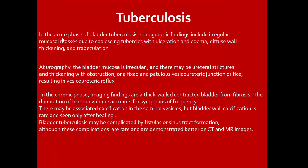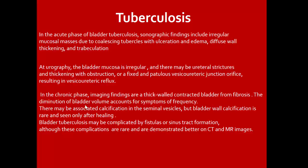Tuberculosis is one cause of cystitis. In the acute phase, bladder TB sonographic findings include irregular mucosal mass due to coalescing tubercles with ulceration and edema, diffuse wall thickening, and trabeculation. Urography shows irregular bladder mucosa, may show ureteral stricture, thickening with obstruction, or a fixed dilated vesicoureteric junction resulting in vesicoureteric reflux. In chronic phase, imaging findings: small contracted bladder from fibrosis. Diminution of bladder volume accounts for frequency symptoms, may be associated calcification in seminal vesicles. Bladder TB may be complicated by fistula or sinus tract, better demonstrated on CT and MR.